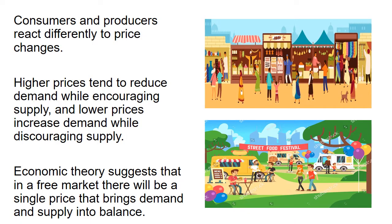Consumers and producers react differently to price changes. Higher prices tend to reduce demand while encouraging supply, and lower prices increase demand while discouraging supply. Remember that we have discussed the economic goals, and one of these is price stability, anchored in economic stability. Economic theory suggests that in a free market there will be a single price that brings demand and supply into balance. This module will give you an understanding of how consumers are willing to purchase and how producers are willing to supply at the agreed price and quantity.